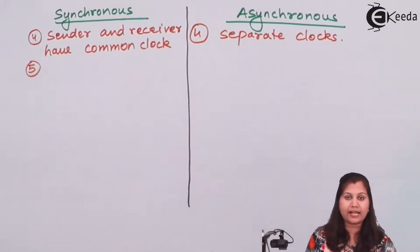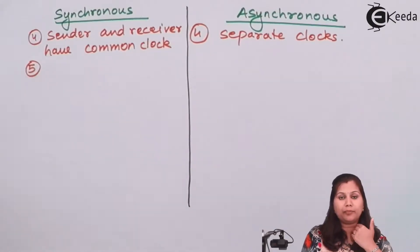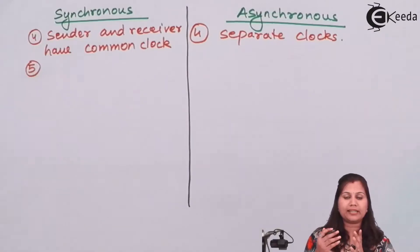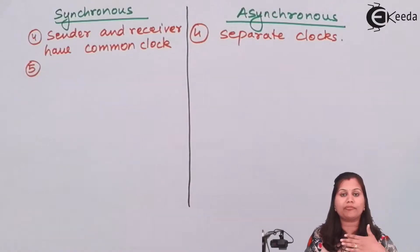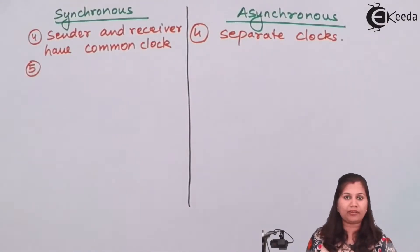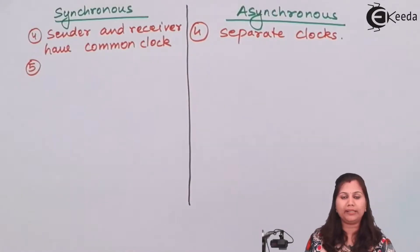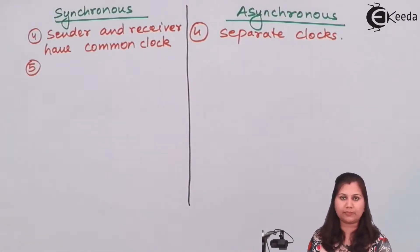Another difference is that in the synchronous method, blocks of data or frames are sent — whenever data transmission takes place, blocks or frames of data are transmitted. But in the case of asynchronous, only one bit is transmitted at a time. So in asynchronous, data is transmitted bit by bit, whereas in synchronous, blocks of data are transmitted.